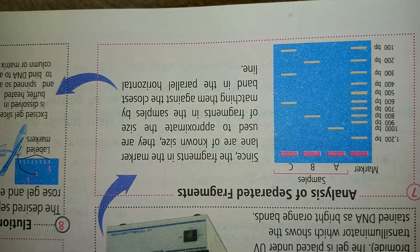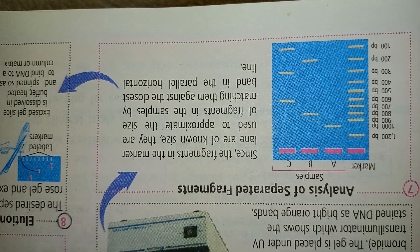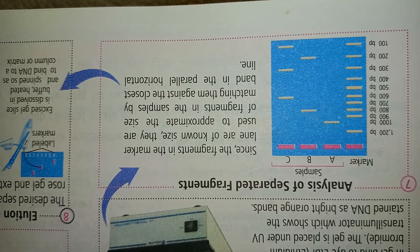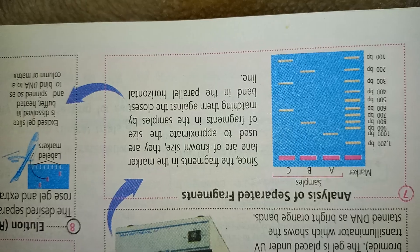Analysis of separation of fragments: since the fragments in a marker's lane are of known size, they are used to approximate the size of fragments of the sample by matching against the closest band in the parallel horizontal line.